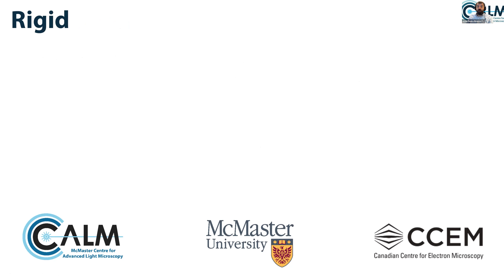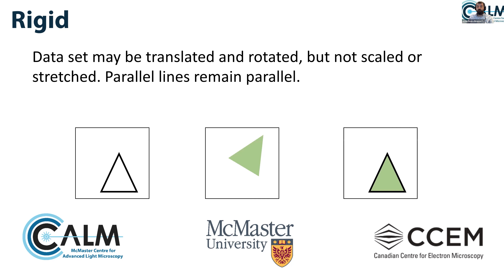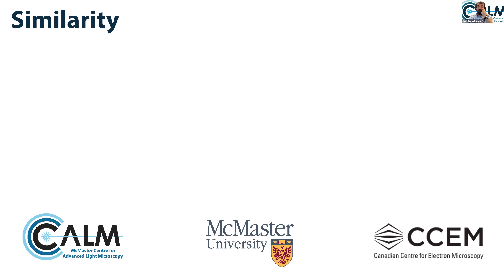Rigid transformations are also very commonly used. Here you can translate, as before, but now you can also rotate your object to compensate for movement. You're not scaling — making it bigger or smaller — or stretching in one axis versus the other. You can only translate and rotate. This is what we call rigid transformation. So basically your object might have rotated slightly, but you can now rotate it and match it to the previous time point.